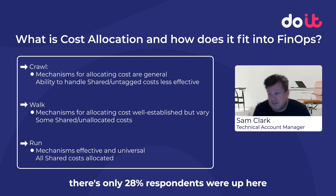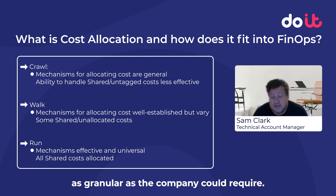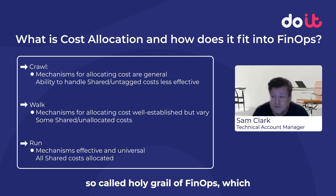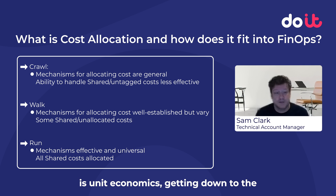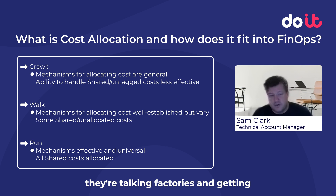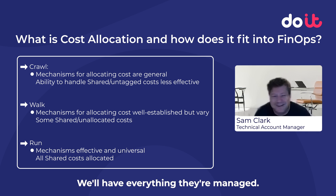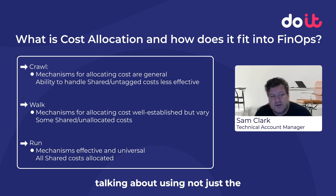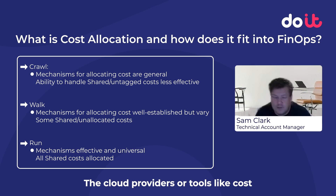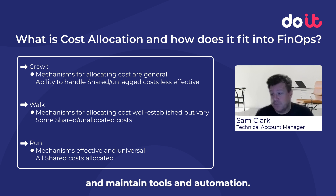At the run maturity — remembering that only 28% of FinOps respondents were up here — costs allocated are very granular and as granular as the company could require. That could mean reaching the so-called holy grail of FinOps, which is unit economics: getting down to understanding what one minute of a customer's time on your website costs, or what one widget produced in a factory really costs — getting right down to the real cost of goods sold. At this level, you'll also have all shared costs managed and no untagged costs. And you're really talking about using not just cloud billing consoles or tools like Cost Explorer, but getting into third-party tools and even home-developed, maintained tools and automation.